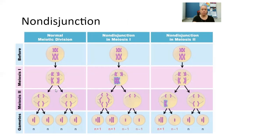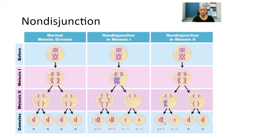In non-disjunction, we have what the meiotic division should look like in a normal sequence, where we would get all haploid cells at the end. If non-disjunction occurs during meiosis I, the chromosomes don't separate, causing one cell to have an extra chromosome pair and another to be missing a chromosome. If this happens during meiosis II, we end up with an extra chromosome, a lacking chromosome, and two normal cells — these two types of non-disjunction can definitely cause issues in an unborn child.